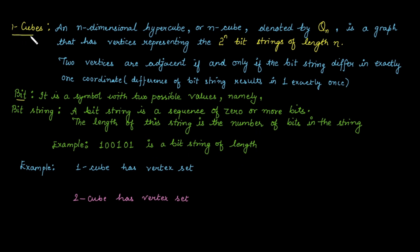n-cube is a simple graph, also called an n-dimensional hypercube, denoted as Q with subscript n. It is a graph that has 2 raised to power n vertices, where vertices represent bit strings of length n.